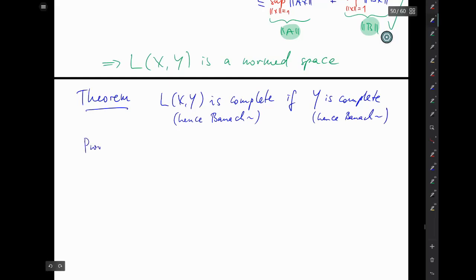Proof: Let the space Y with its addition, alpha times, and its particular Y-norm be complete. We have to show that L(X,Y) is complete. To show this, we have to show that every Cauchy sequence in L(X,Y) is convergent and the limit is again in L(X,Y). So let's take an arbitrary Cauchy sequence in L(X,Y).